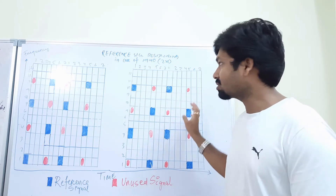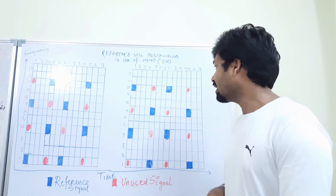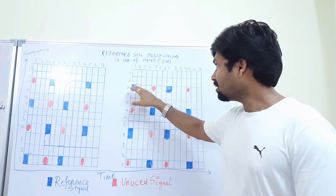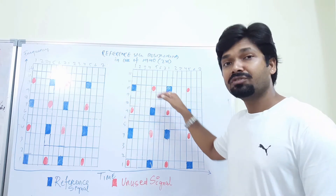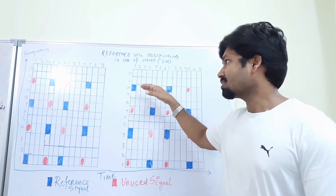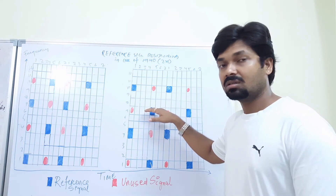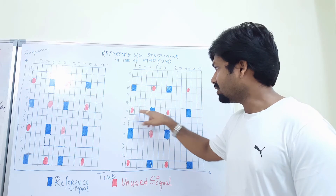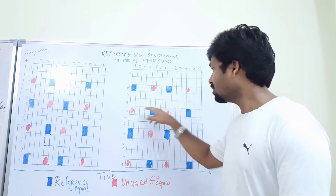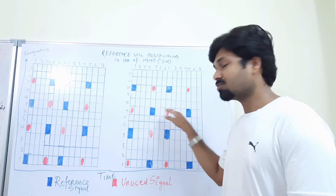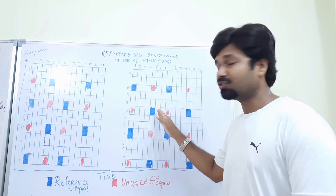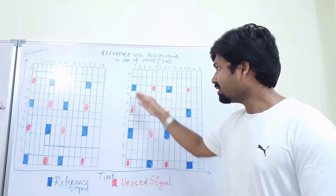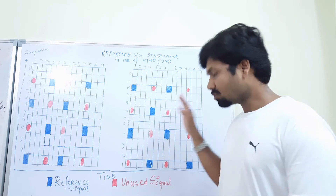The continuity between subcarrier transmission and different symbols is like every third subcarrier. So if this line of transmission is happening — one, two, three — this third subcarrier line transmission again is happening, but with different symbols, not in the same symbol line. In the same symbol line it is every sixth subcarrier. Those are the three basic rules of reference signal transmission.